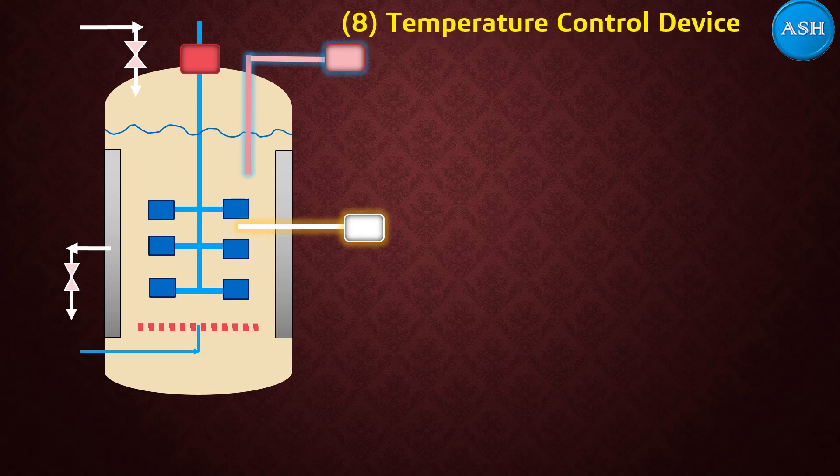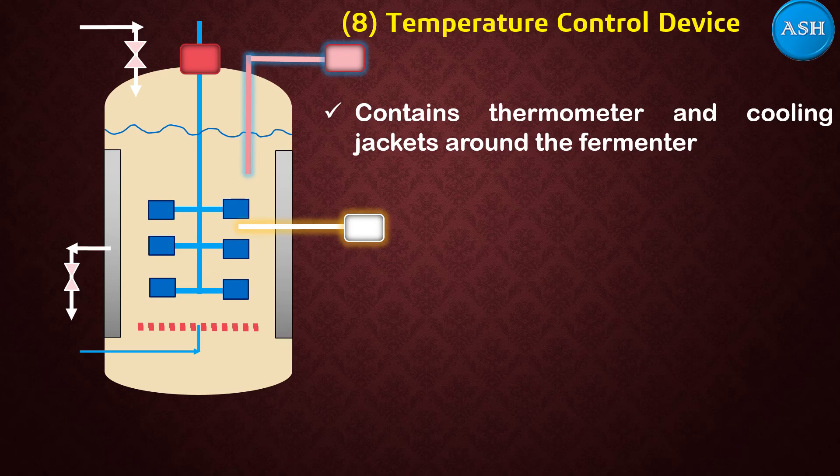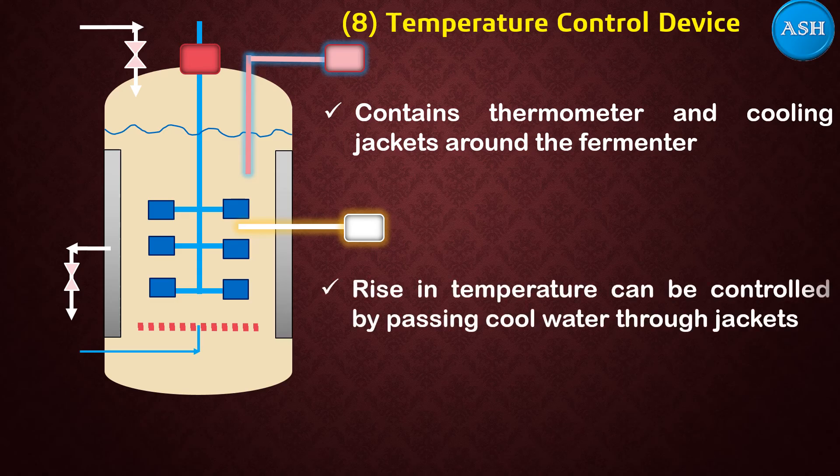The eighth major part is the temperature control device. It contains a thermometer or cooling jackets placed around the fermenter. If the temperature rises up, it can be controlled by adding cooling water around the jacket.